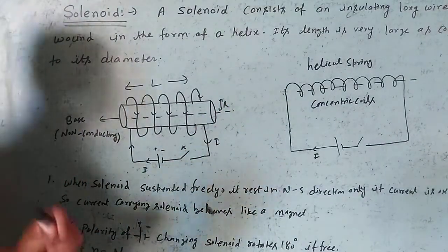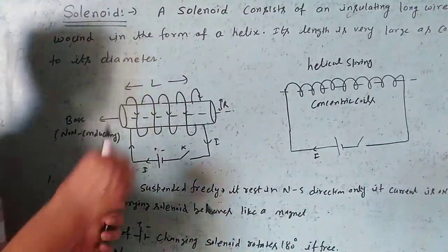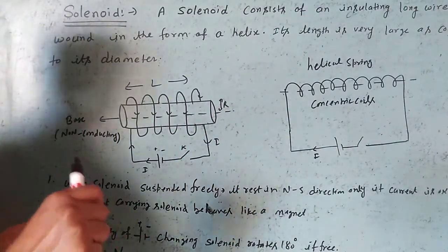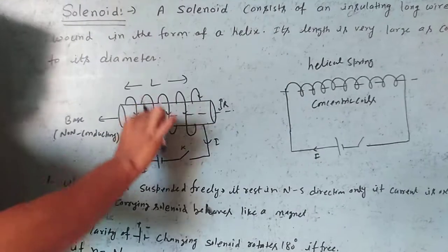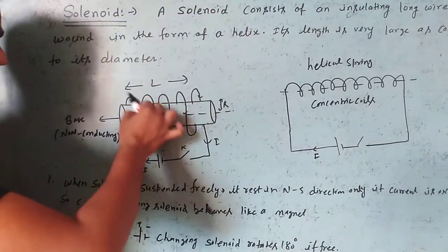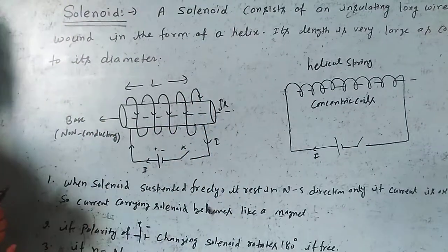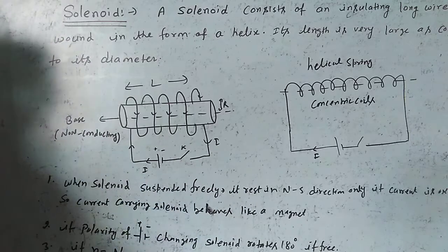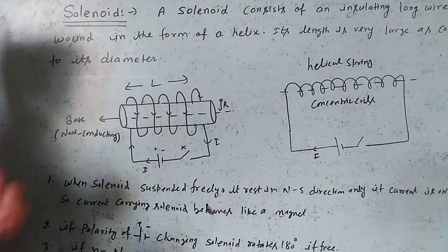So basically, a solenoid consists of an insulating long wire wound in the form of a helix. Its length is very large compared to its diameter. This is called a solenoid.